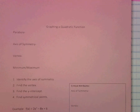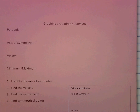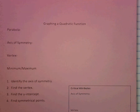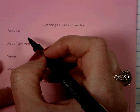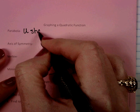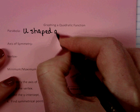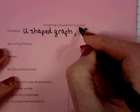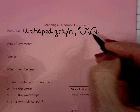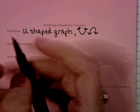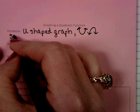Let's talk about some vocabulary. The first word is parabola — a parabola is what we call the graph of a quadratic function. It is a U-shaped graph, and the graph could open up or it could open down. We've already seen graphs like this, so it shouldn't be totally foreign. Another important thing to know about a parabola is that it is symmetrical.